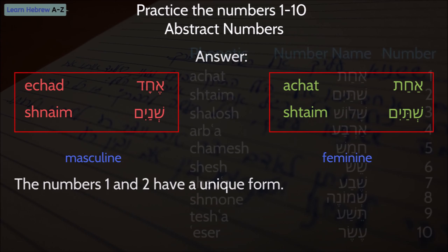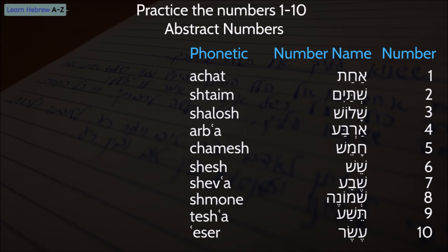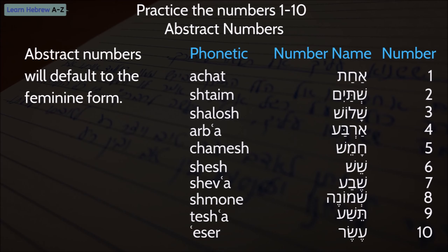Now we know how to better recognize the feminine form. Remember, we are not counting anything yet or denoting any noun — these are just abstract numbers. Let's look at the full list of numbers again. Abstract numbers will always default to the feminine form, which you can see on the screen right now. So when you simply count numbers like 1, 2, 3, 4, etc., always use the feminine form.